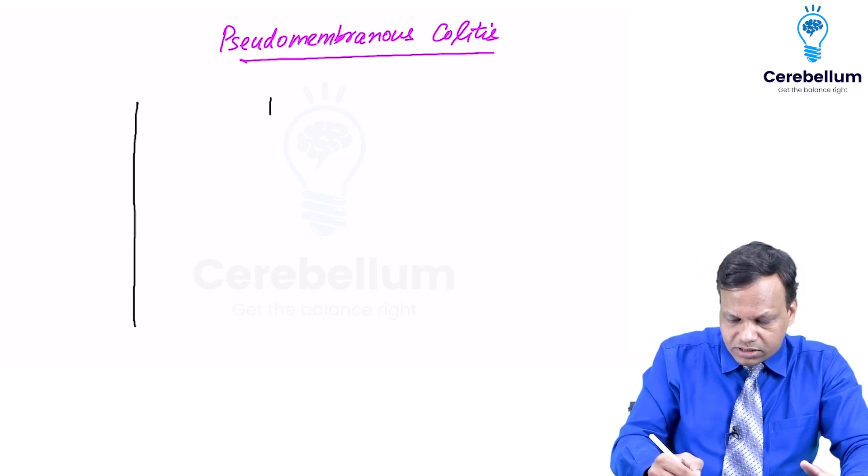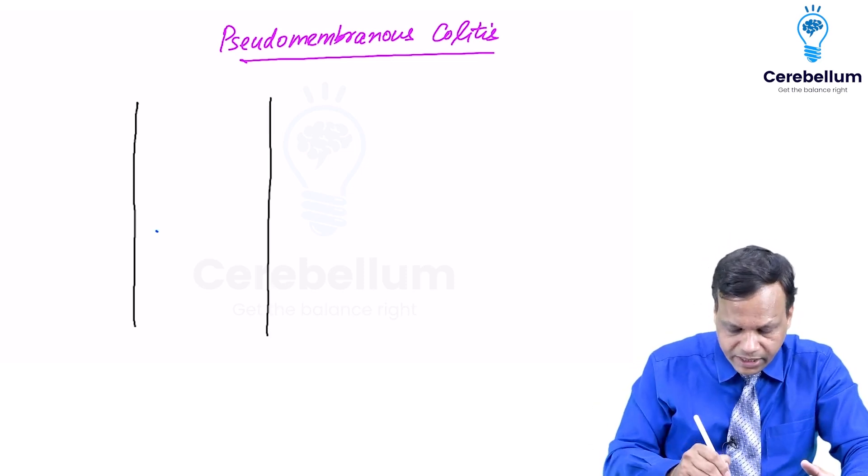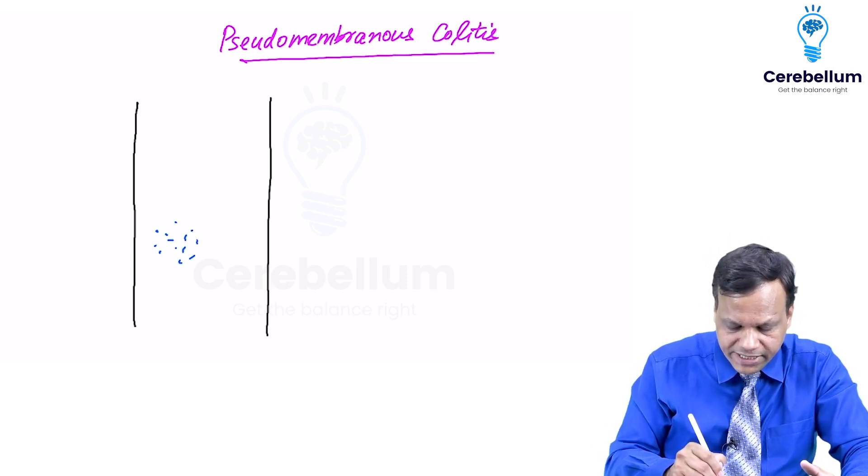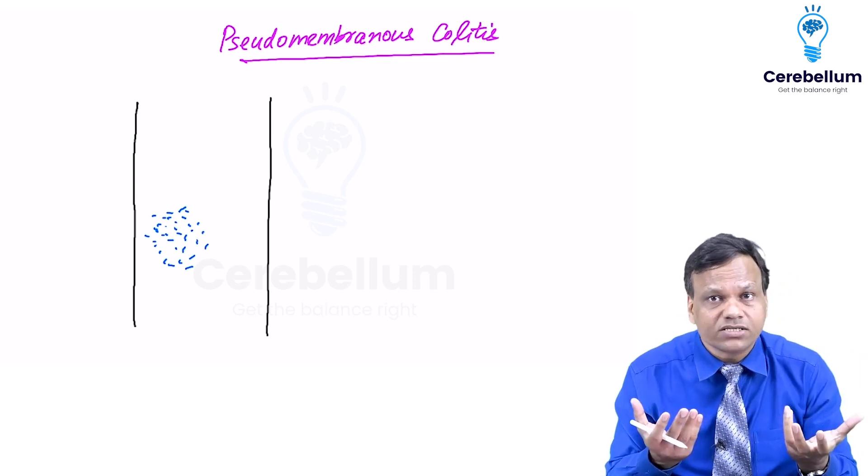This is our colon. This is our GIT. Our GIT normally contains friendly bacteria. Now the question is why we say they are friendly bacteria? What is the advantage they give to us?